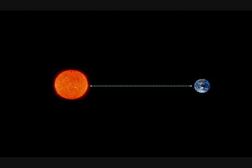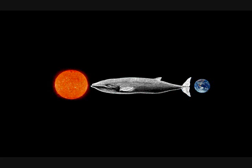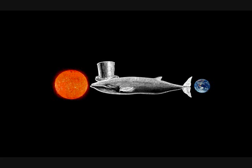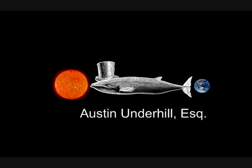I would then like you to imagine a giant space whale in the spot between the Sun and the earth, so the giant whale is at the average distance between the two. I would also like you to imagine that the giant whale has a top hat and that the whale's name is Austin Underhill.